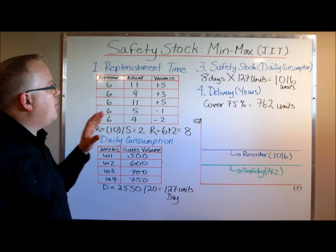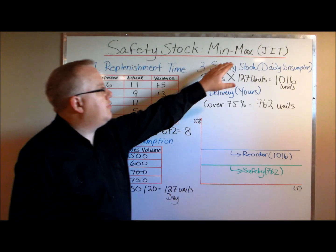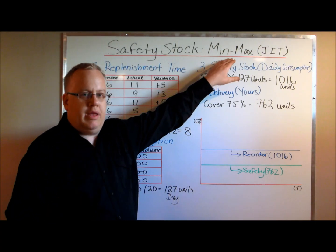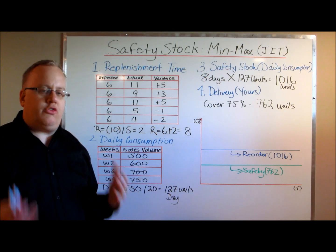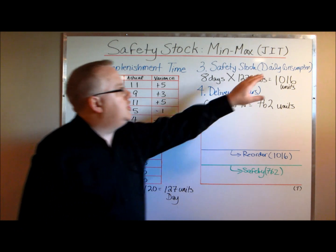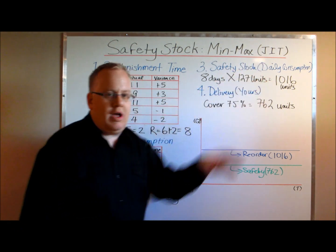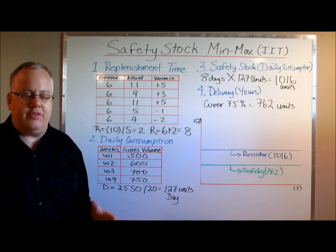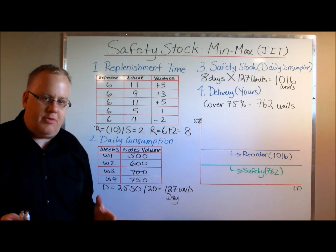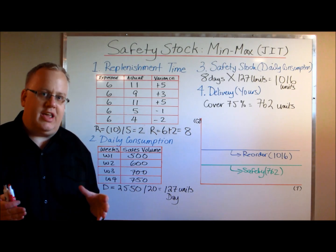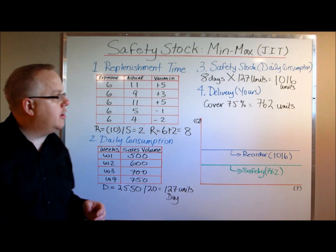A safety stock is most often associated with min-max. However, it also applies to JIT, which is why I put it in parentheses, because even in just-in-time supply chains, you need a little bit of just-in-case inventory.